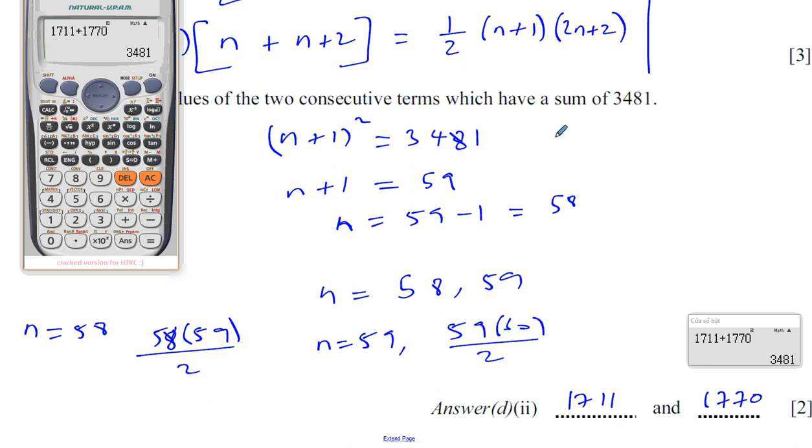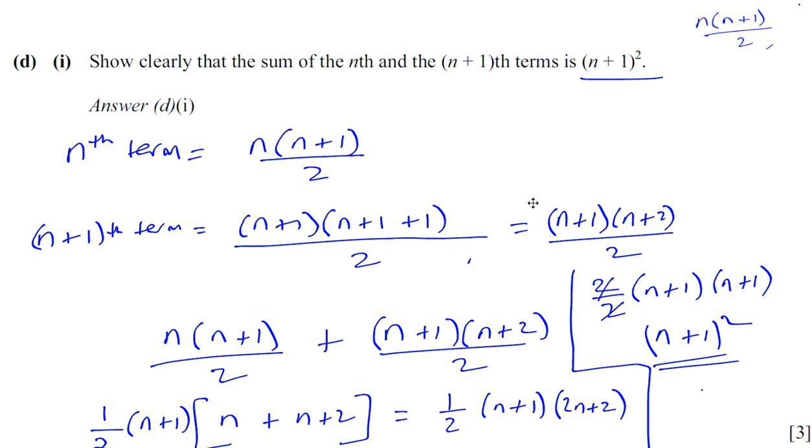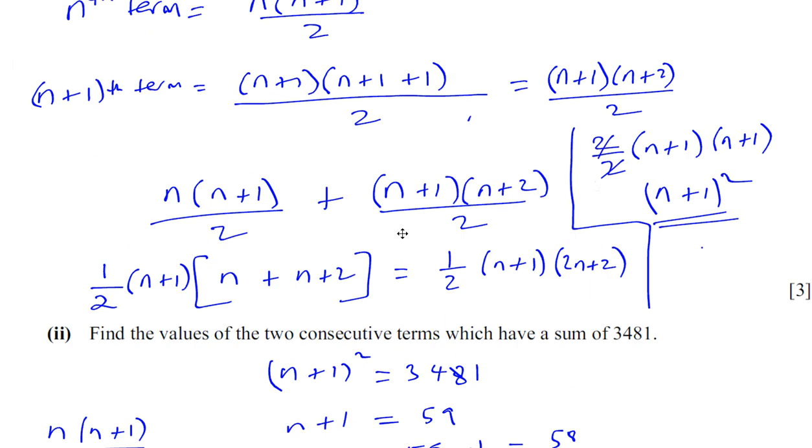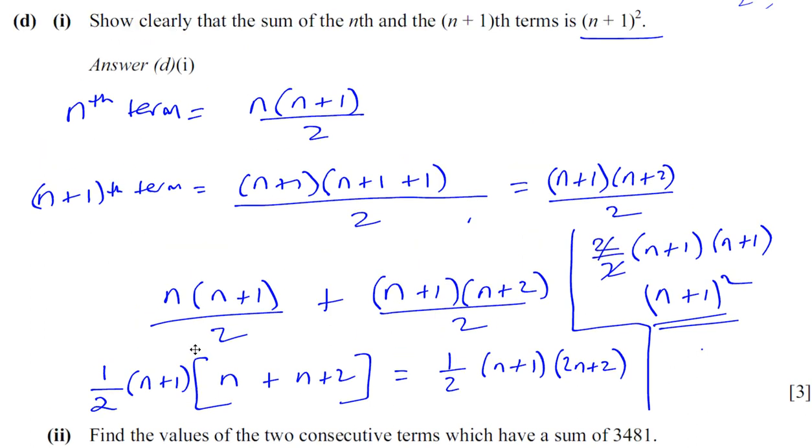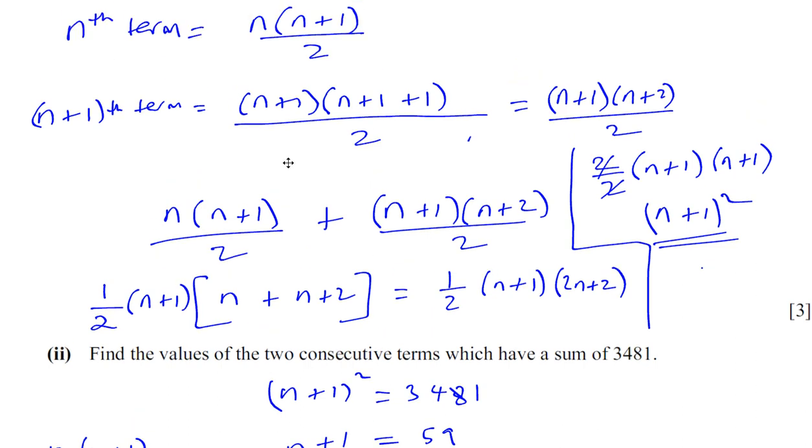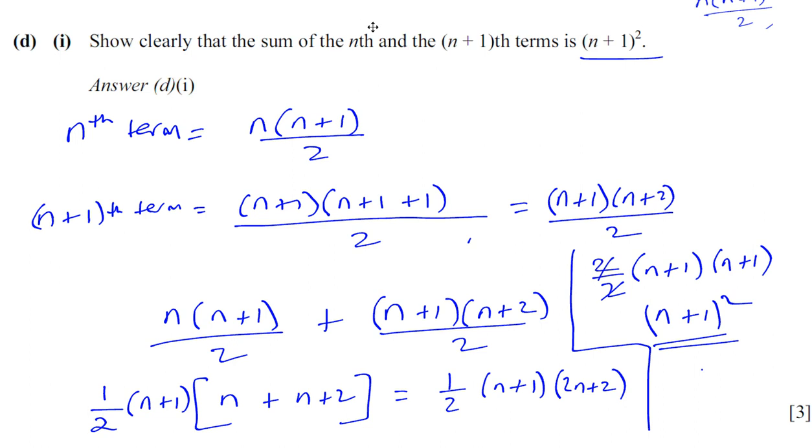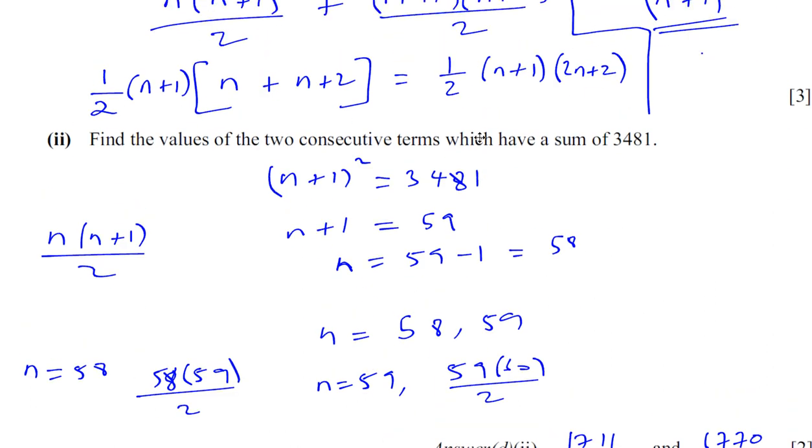Now, one of the things you should really try to keep in mind here is the fact that we didn't need to know how to show this. We could have answered part 2 without knowing how to do part 1. Because part 2 doesn't rely on you showing this. It relies on you using what they already gave you. They told you the sum of 2 consecutive numbers, n and n+1, is given by this expression. So, you could have got the marks, the two marks, part 2, without having known how to do part 1.